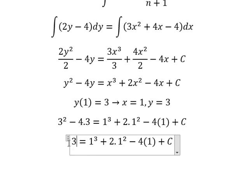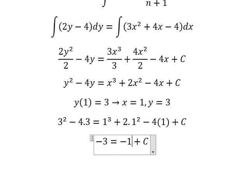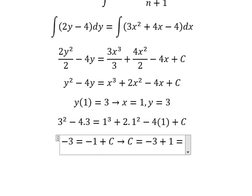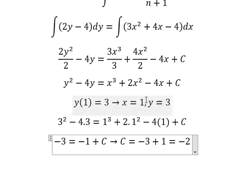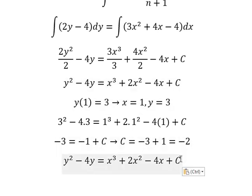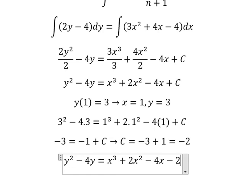So -3 = -1 + C, which gives us C = -2. This is the end. Thank you for watching.